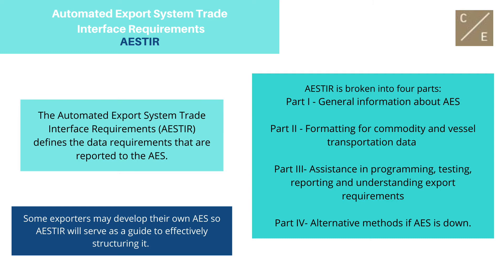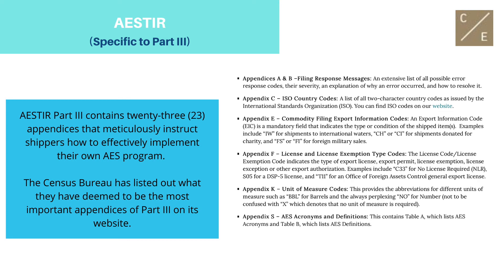AESTIR is broken into four parts. Part 1 covers general information about AES. Part 2 covers formatting for commodity and vessel transportation data. Part 3 covers assistance in programming, testing, reporting, and understanding export requirements. Part 4 covers alternative methods if AES is down. Some exporters may develop their own AES, so AESTIR will serve as a guide to effectively structuring it. For any exporter wishing to develop their own AES, AESTIR Part 3 is the most important section. AESTIR Part 3 contains 23 appendices that meticulously instruct shippers on how to effectively implement their own AES program. The Census Bureau has listed the most important appendices of Part 3 on their website, and these important appendices are listed to the right.